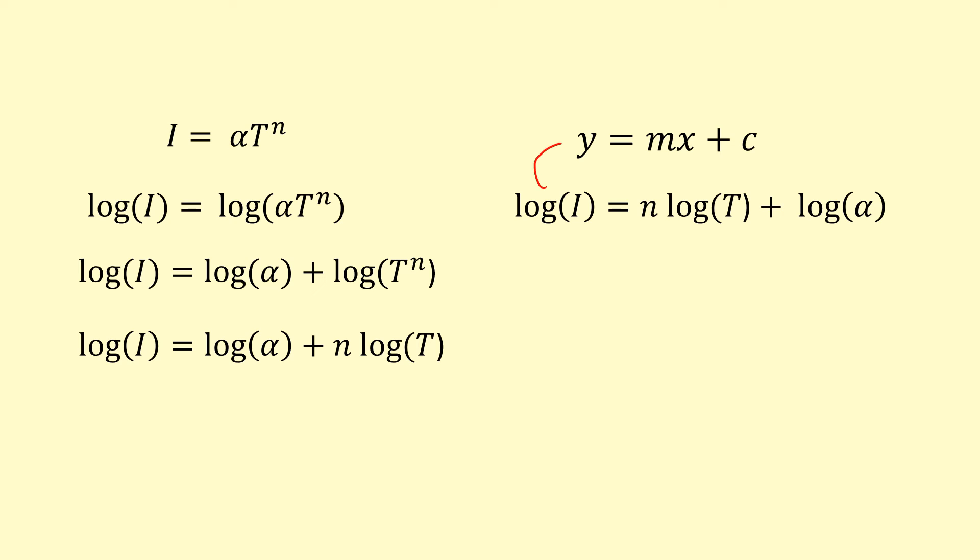I'm going to compare it directly to my Y equals MX plus C equation. I could plot log of the intensity that I measure on the Y axis. On the X axis, I can plot log of the absolute temperature in Kelvin. That should give me the gradient as N, the power of T. And then my Y intercept should be log alpha.